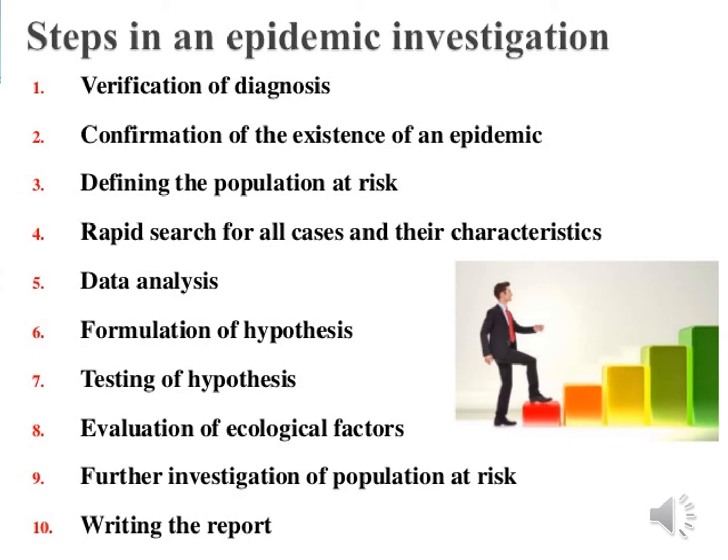Occurrence of an epidemic calls for an investigation, and an epidemic investigation calls for inference as well as description. Following are the 10 steps which we need to follow during the investigation of an epidemic: number one, verification of diagnosis; number two, confirmation of existence of an epidemic; number three, defining the population at risk; four, rapid search for all cases and their characteristics; fifth, data analysis; sixth, formulation of hypothesis; seventh, testing of hypothesis; eighth, evaluation of ecological factors; ninth, further investigation of the population at risk; and tenth, writing the report.